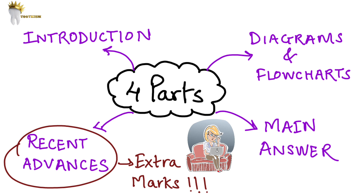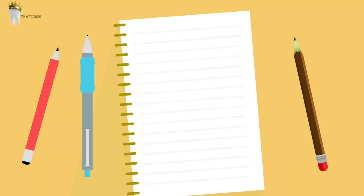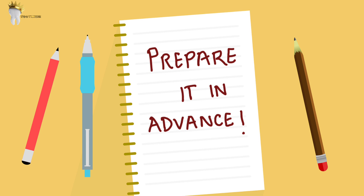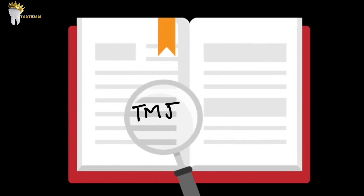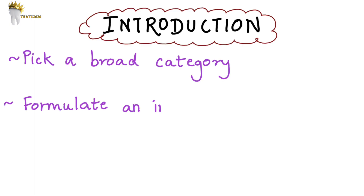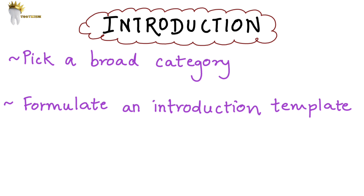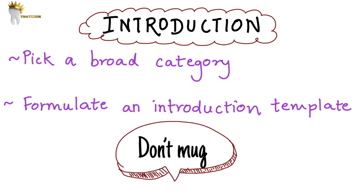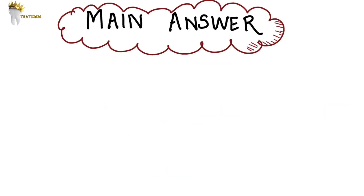It will also get you into the habit of reading scientific articles. Now, how do you come up with an introduction? The easiest way is to prepare an introduction beforehand so that when you see the question you can immediately start writing. Pick a broad category — for example, temporomandibular joint disorders or pre-prosthetic surgery — and formulate an introduction that you can write for any question asked regarding those topics. You don't have to memorize it word for word, just keep the main points in mind and keep your introduction within four to five lines.